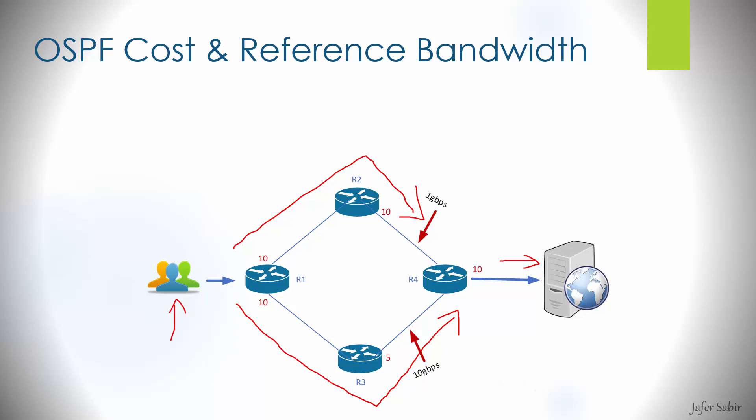The routers exchange information with each other through link state advertisements within the OSPF area. OSPF is a link state protocol, and from the advertisements each router builds something called a link state database, which contains all of the information about the other routers, including things like the cost of the links and the networks behind the links.